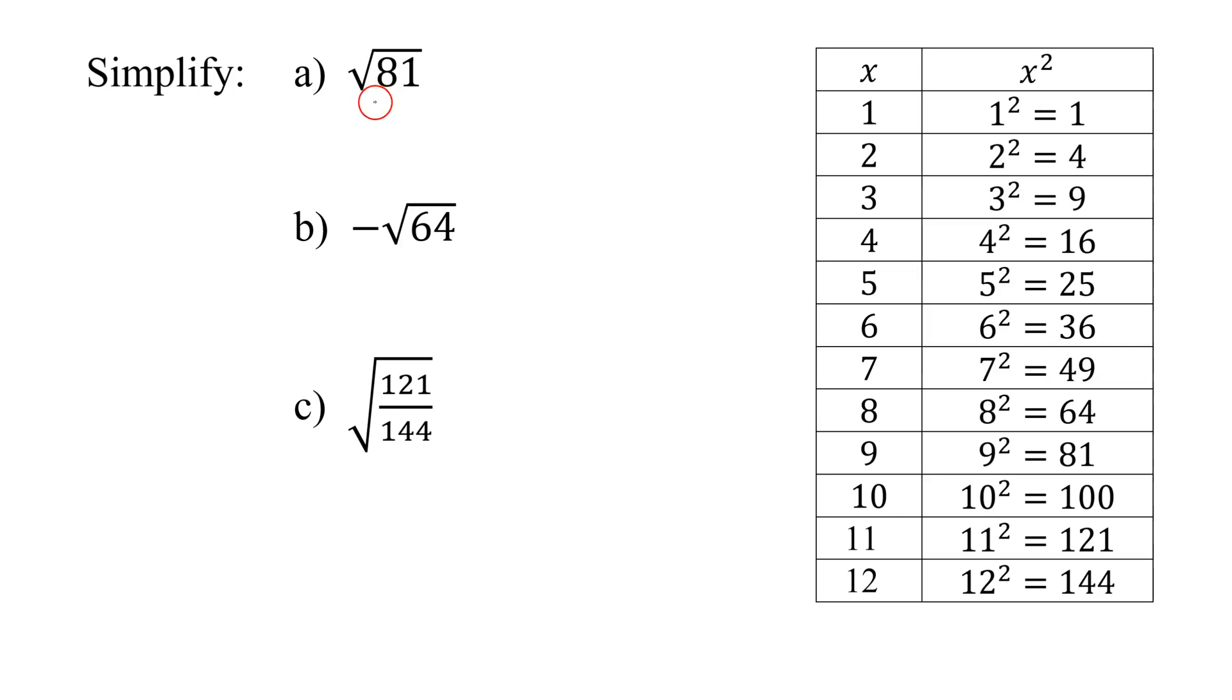So let's look at our first example, the square root of 81. What do we mean by the square root of 81? It means what number, when multiplied by itself, gives me 81.